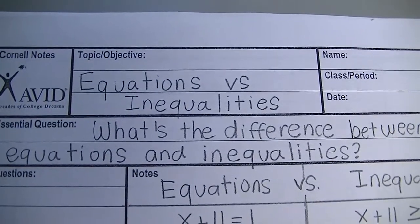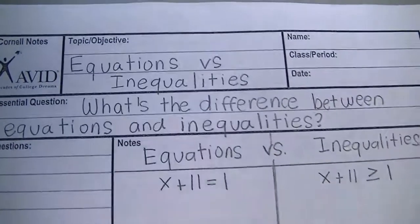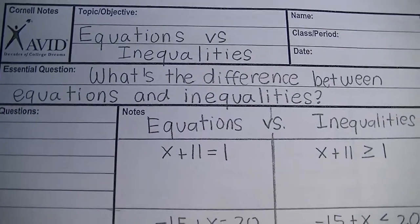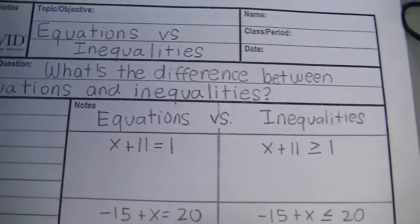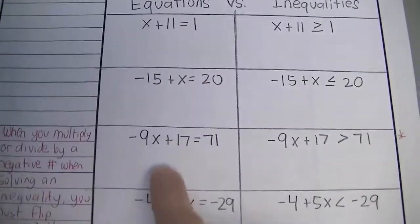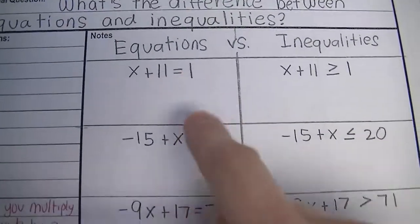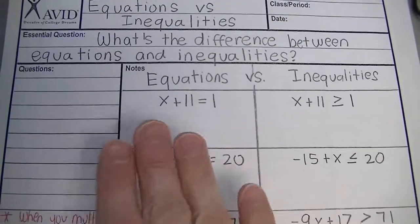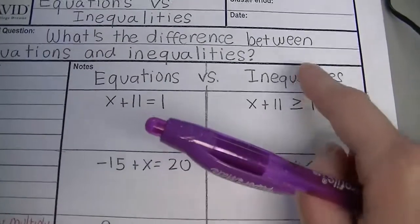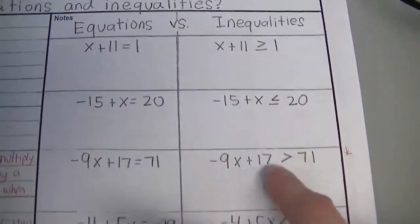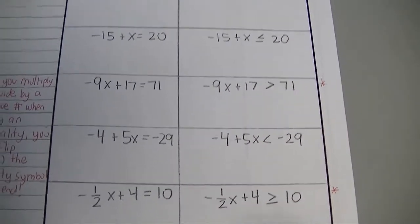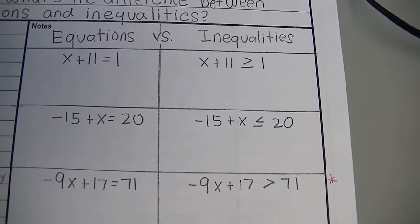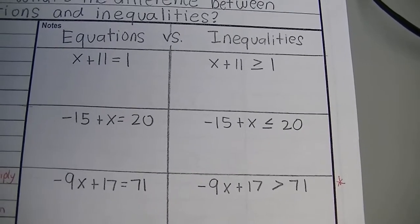The topic is equations versus inequalities. The essential question is: what's the difference between equations and inequalities? In the first column, these are all equations, simply because they have an equal sign. Equations are only going to have one answer. Over here in the right-hand column, these are all inequalities. Inequalities have more than one answer, which is why you have to graph their solutions on a number line.